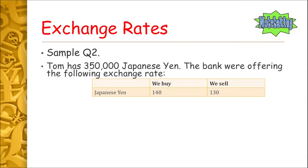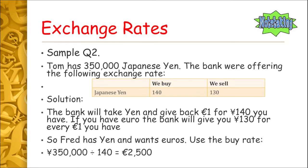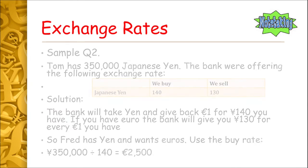Tom has 350,000 Japanese yen and wants to convert to euros. We use the buy rate, because the bank is buying the yen from Tom and giving him euros in return. So we take 350,000 and divide it by the buy rate of 140, giving a total of 2,500 euro. Pause the video to make sure you fully grasp that.